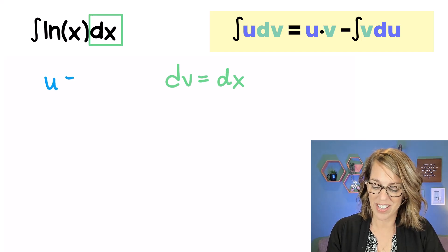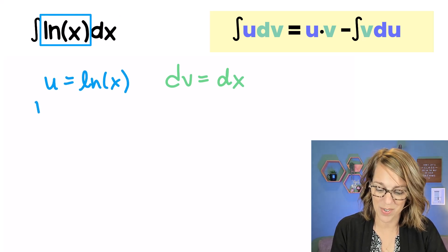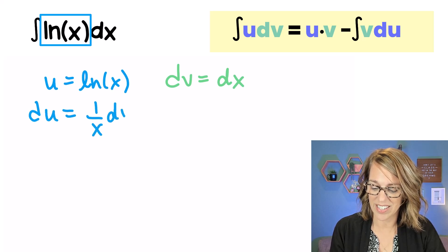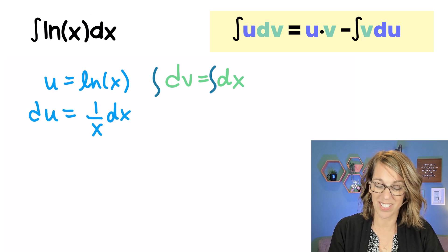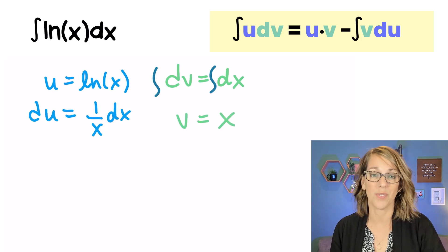So that means that u is the natural log of x. Let's go ahead and start with u. du then is 1 over x dx. And I need just an antiderivative here. This one's really nice. I end up with v is equal to x.